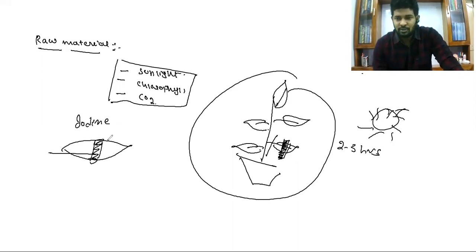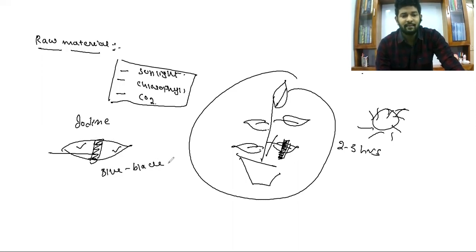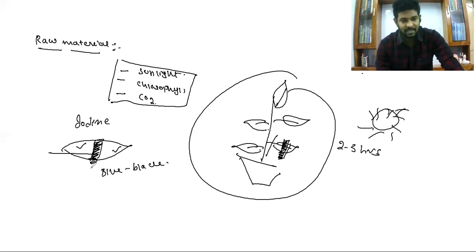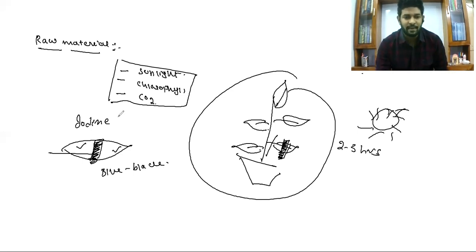During this process, what we can observe is the portion which is exposed to the sunlight shows blue-black color, whereas the portion which is not exposed to the sunlight shows no discoloration — no color change takes place there. To understand why this is happening, we have to understand what is happening inside this leaf.